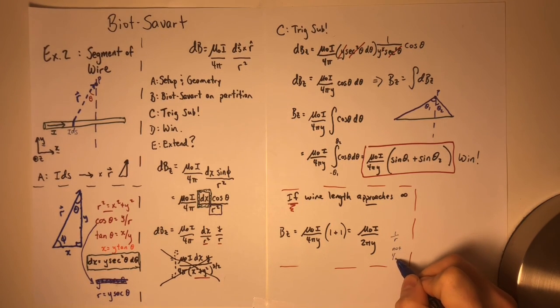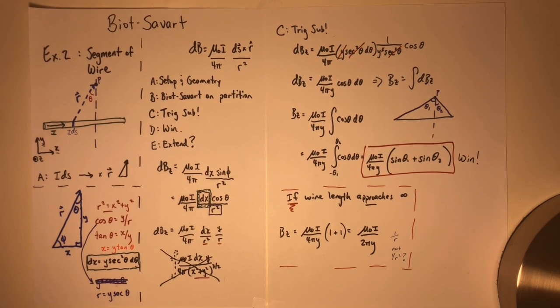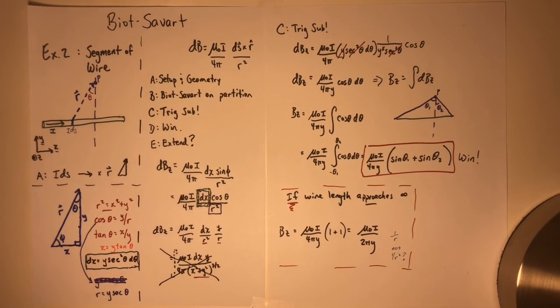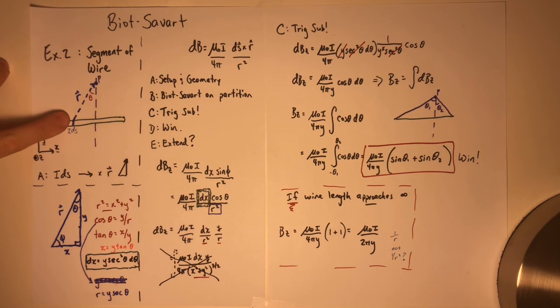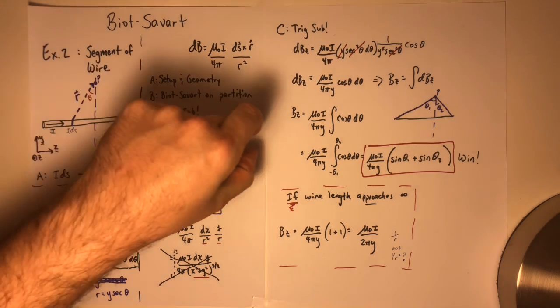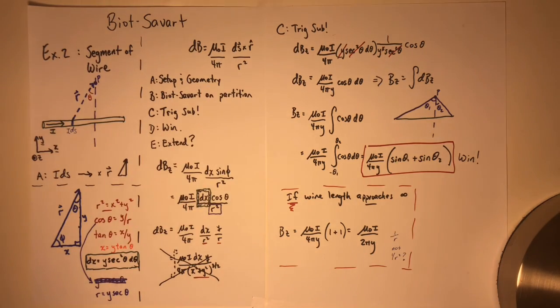One benefit is that you can see this expression has one over r behavior and not one over r squared. That kind of seems to run counterintuitively to all the distance matters kind of stuff that I've been talking about. But remember, what you've essentially done is you've created an infinite number of current elements. So if you've made the number of them extend towards infinity in one direction, then that means that you've got an infinite number of one over r squared components. And those two infinities sort of tend to become just a one over r.